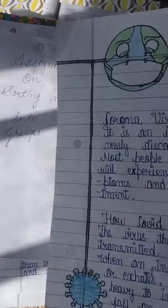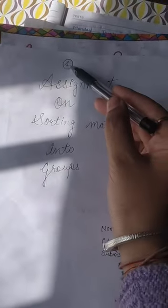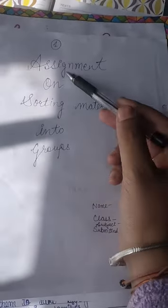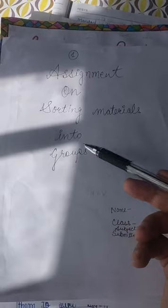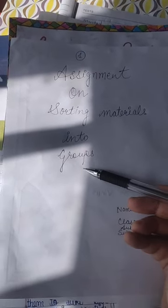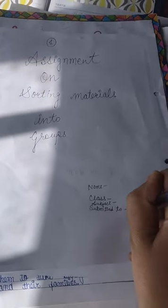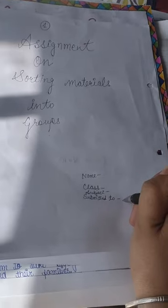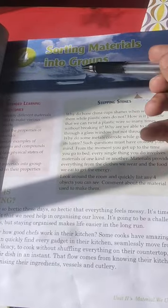These are the assignment sheets. It is like interleaf pages. So you have to write down on one page 'Assignment' at the top, and you have to write 'Assignment on Sorting Materials into Groups'. This is the topic of the assignment. After that, on the right side of the page, you have to write name, then class, then subject, then submitted to - which means to whom you are submitting it, for example, the name of the subject teacher.